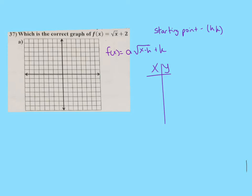So h in this problem is 0. k is 2. So my starting point is going to be 0, 2.